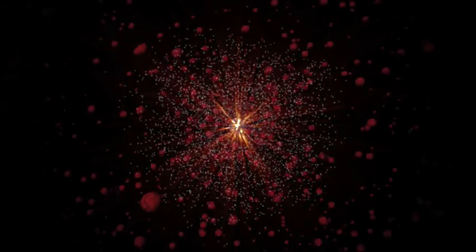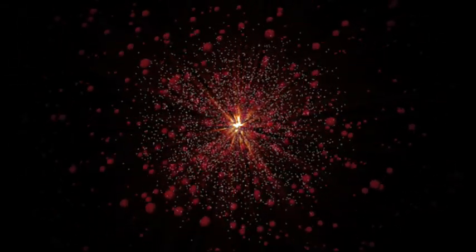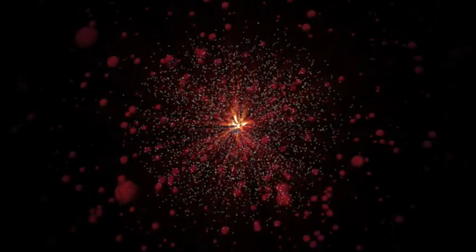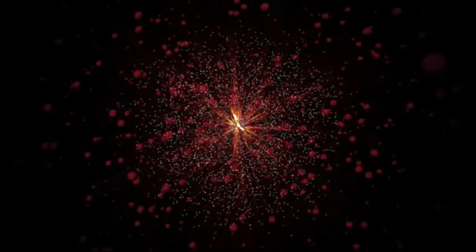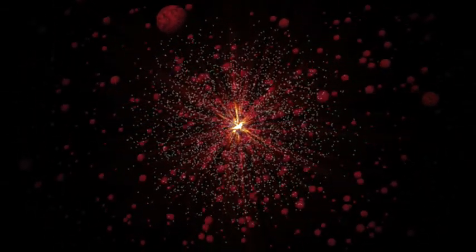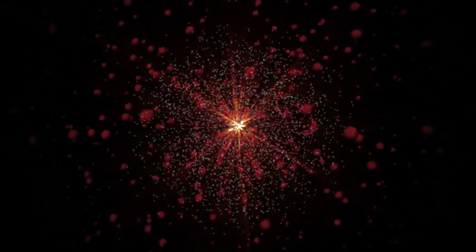These particles are called virtual particles because they violate the conservation of energy rule for extremely short times in order to exist. They exist because of energy fluctuations allowed by Heisenberg's uncertainty principle. But they must disappear quickly because of the same principle.